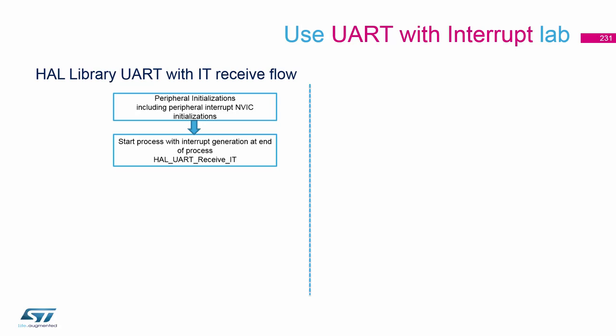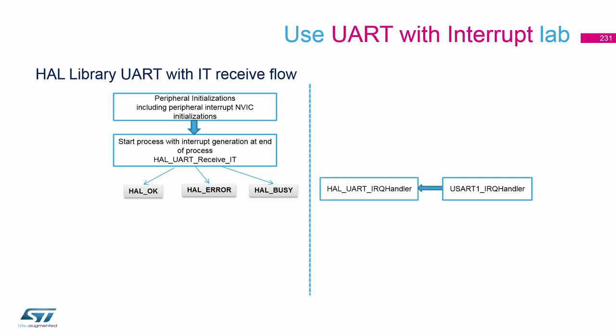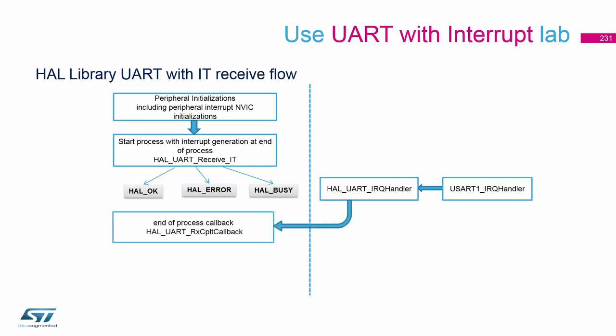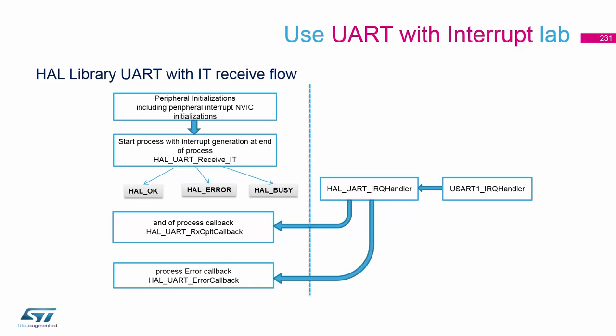First, we initialize the NVIC and then call, for example, receive with interrupt. Then we set the state to busy — if everything is OK. When we receive the number of bytes, we are notified via the UART interrupt handler. We call the HAL handler, and when we receive the number of bytes we want, we are notified with the callback, or we can go to the error callback if an error occurs.